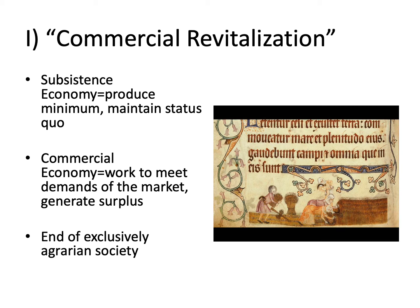Obviously, if you're living at a subsistence standard, you're very vulnerable to any interruptions of agricultural cycles — military conflict can disrupt a community. The commercial economy that emerges over this period creates an incentive to produce more. There's more buying and selling of goods and agricultural produce, so if you produce more you can take it to a market and sell it, benefiting your family's economy. We also start to see the emergence of concentrated markets, specialization of labor, and individuals not engaged in producing food — marking an end to this exclusively agrarian society.